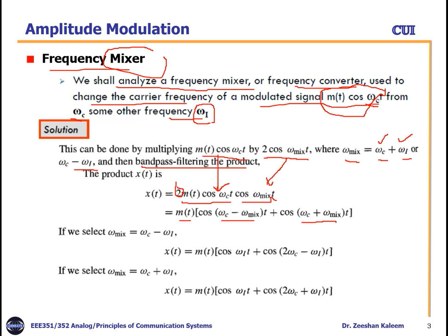There are two cases for ωmix: it can be either ωC plus ωI or ωC minus ωI. If we select ωmix equal to ωC minus ωI and substitute into the equation, the ωC terms cancel, giving M(t)·cos(ωI·t). The full expression becomes X(t) = M(t)·cos(ωI·t) + cos((2ωC − ωI)·t). Similarly, if we select ωmix equal to ωC plus ωI, we get X(t) = M(t)·cos(ωI·t) + cos((2ωC + 2ωI)·t).